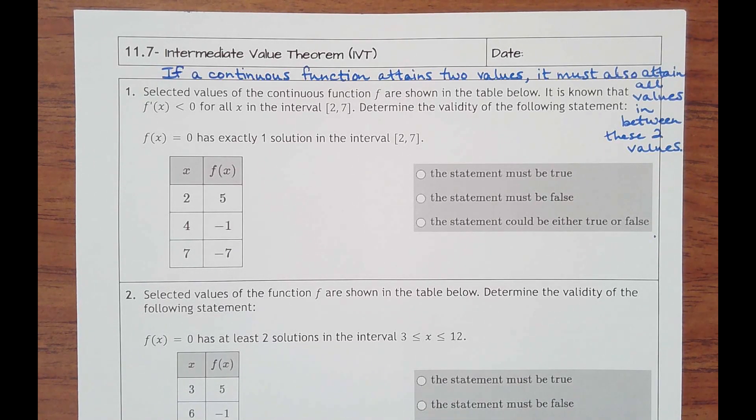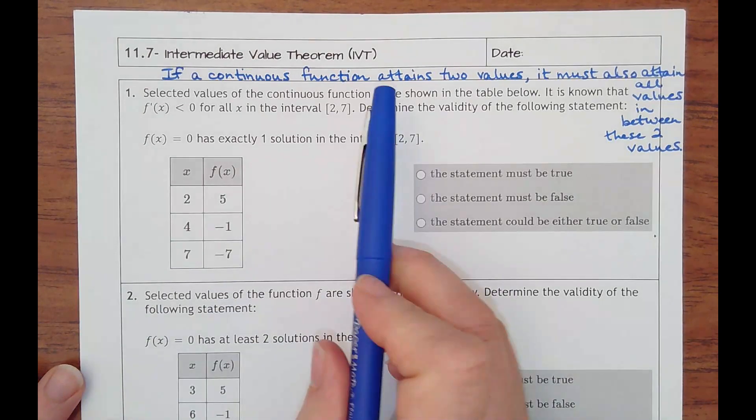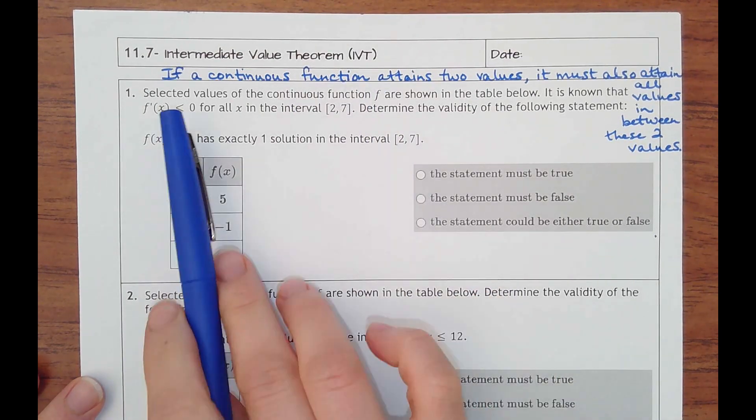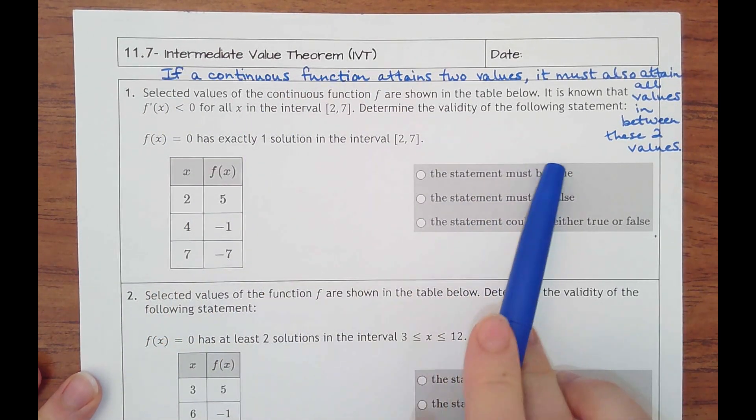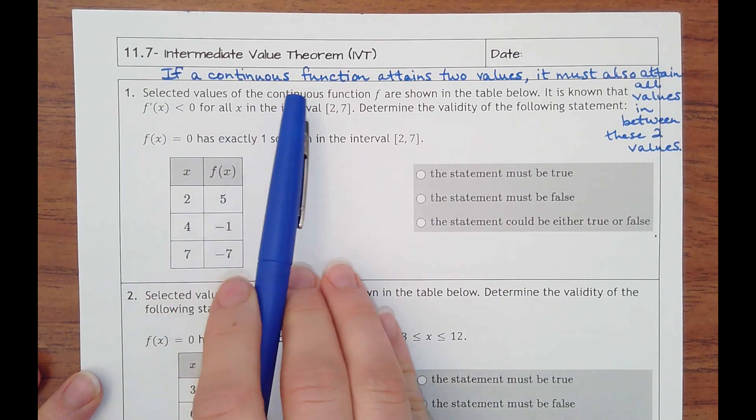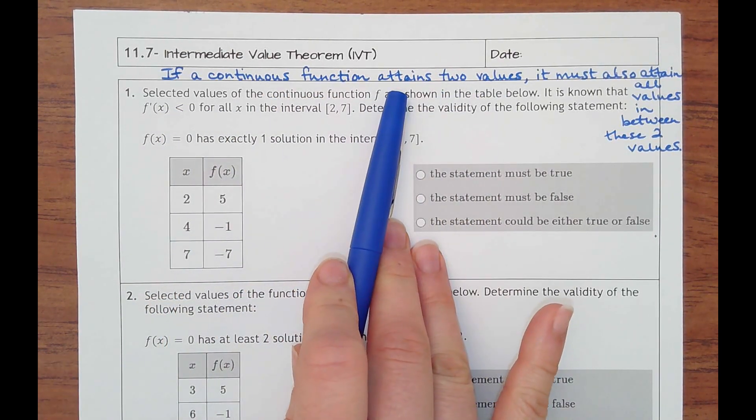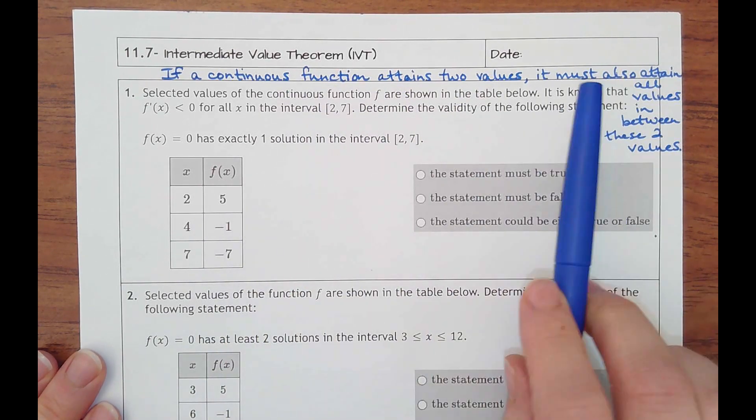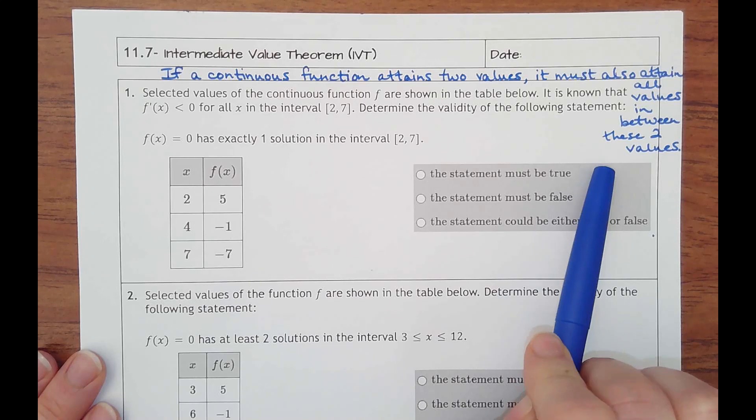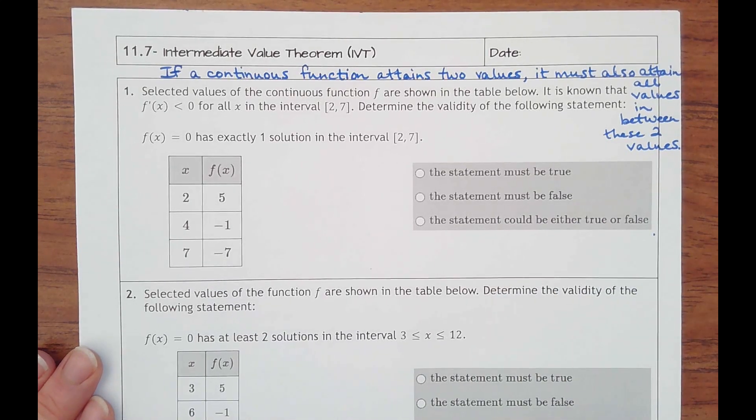Well, it's 11.7 intermediate value theorem. You'll see it called IVT. If you want to write this down, this is what it means. It says if a continuous function attains two values, meaning there's two certain y values within a continuous function, it must also attain all the values between these two values.